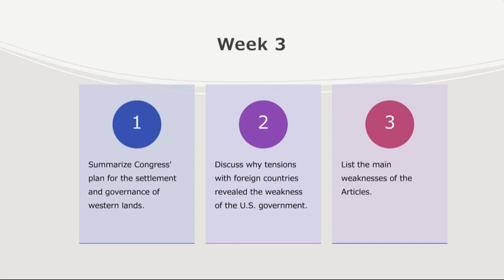During the years immediately following the revolution, one of the pressing issues was the expansion into the Western territories. Congress devised a plan to organize and govern these lands, culminating in the Northwest Ordinance of 1787. This ordinance laid the groundwork for the orderly creation of new states in the Northwest Territory, including what would become Ohio, Indiana, Illinois, Michigan, and Wisconsin.